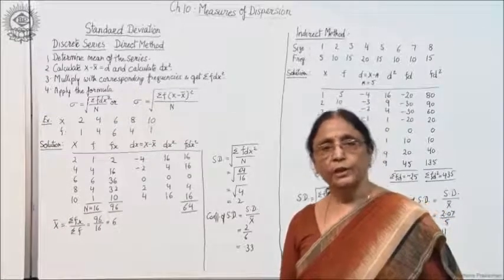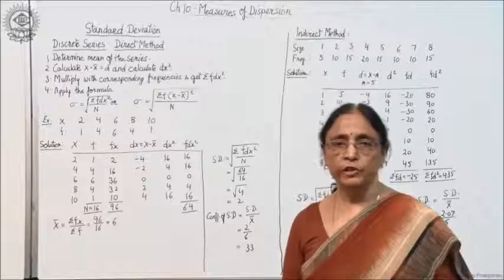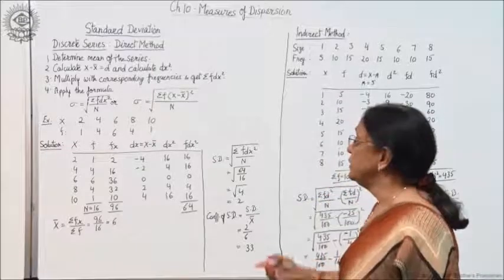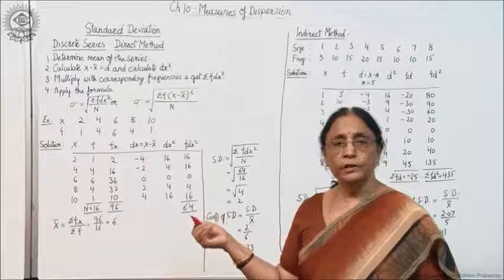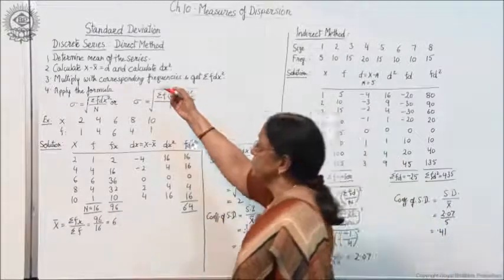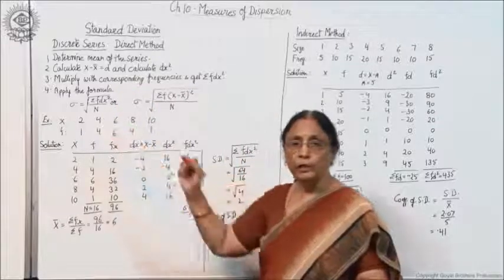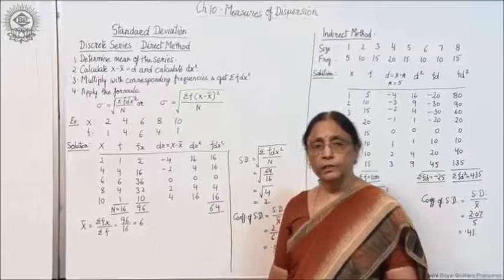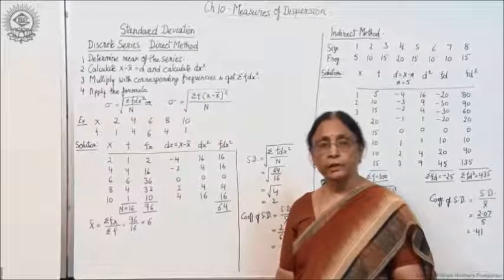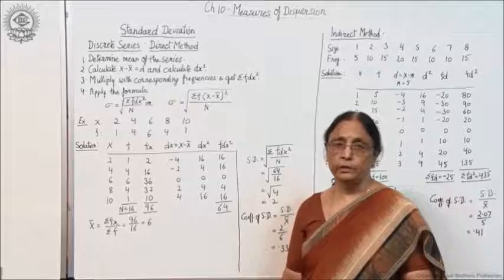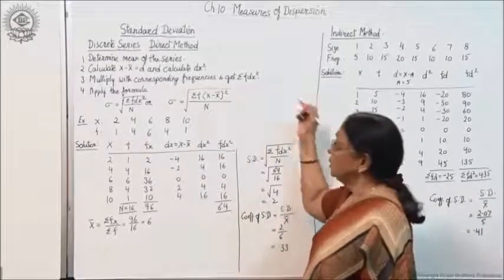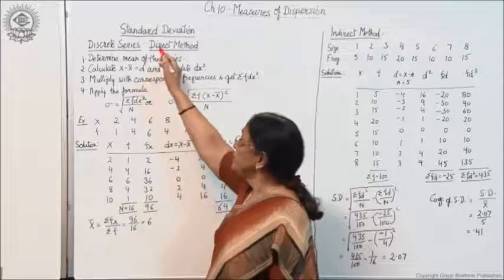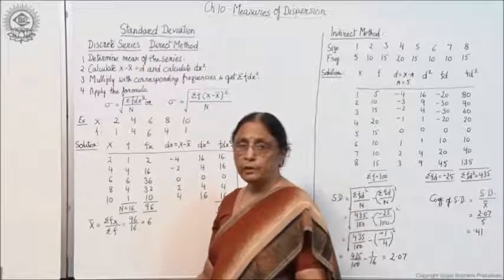Hello everybody. Today we are going to learn the calculation of standard deviation in case of discrete series. You have learnt the calculation in case of individual series; now next is discrete series. There are three methods of calculating standard deviation: one is direct method, second is indirect method, and third is step deviation method. First is the direct method.